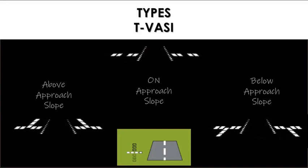The pilot on glide slope will see a horizontal line of four white lights, as shown in the middle. When above the slope, the pilot will see an inverted white T with one, two, or three white fly-down lights visible — the higher the aircraft, the more fly-down lights are visible. When below the correct approach slope, the pilot will see a white T, and the lower the aircraft, the more fly-up lights will be visible.